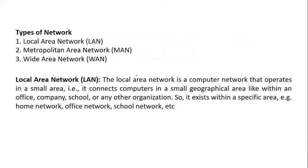I have added terminologies in between — you can pause the video and revise those. Now the first topic is types of networks. The types available are LAN, MAN, and WAN. LAN stands for Local Area Network — a network that operates in a small geographical area, connecting computers in offices, schools, companies, or other organizations. It is also called home network, office network, school network, or institutional network.